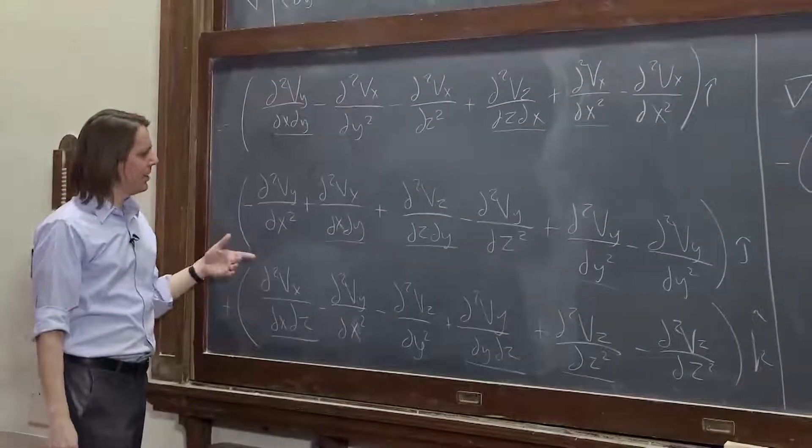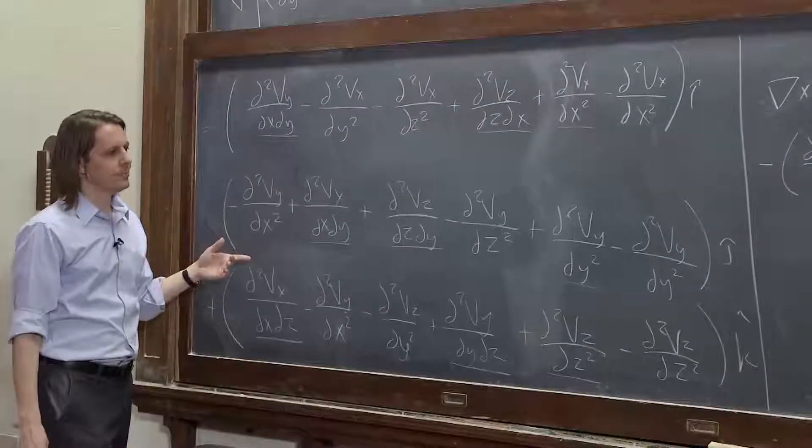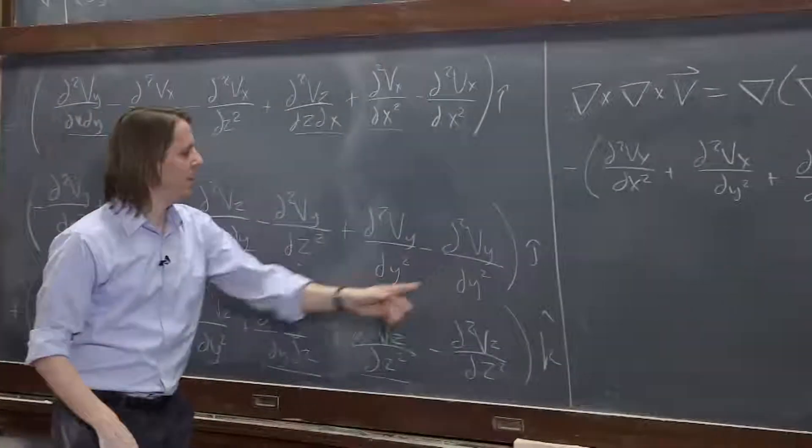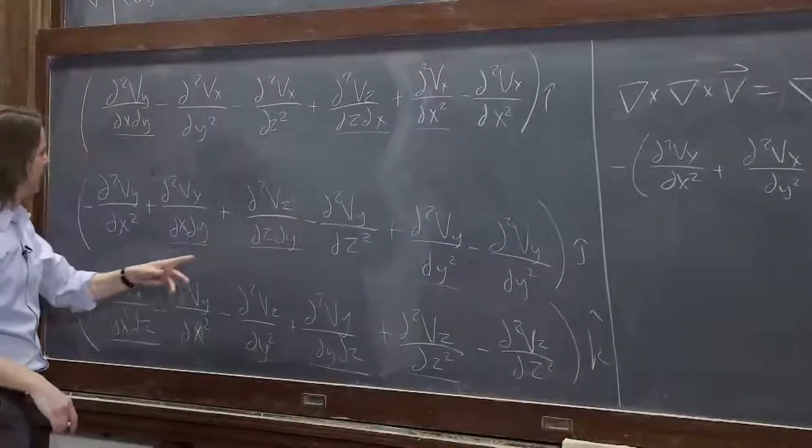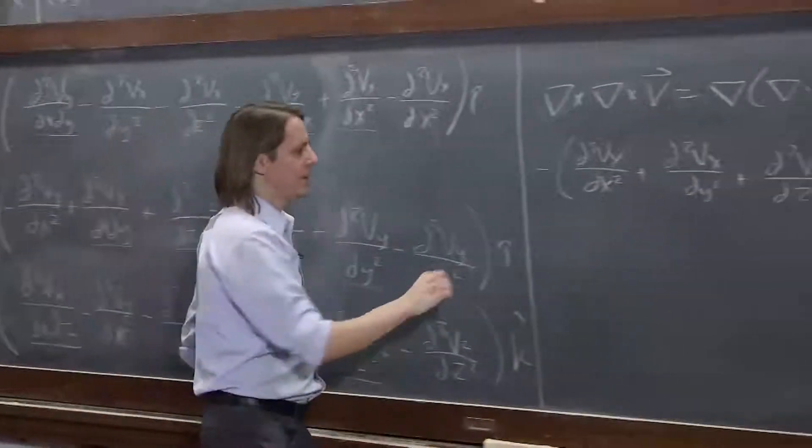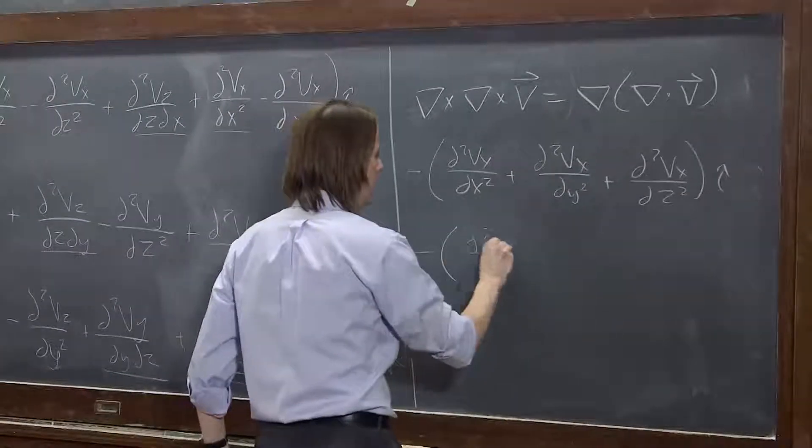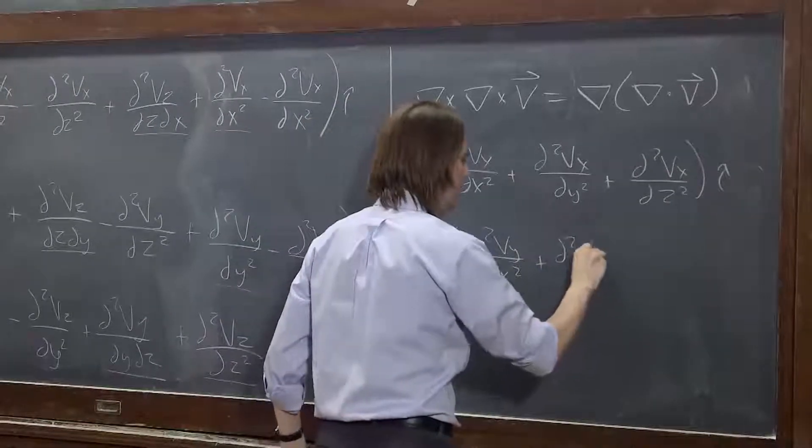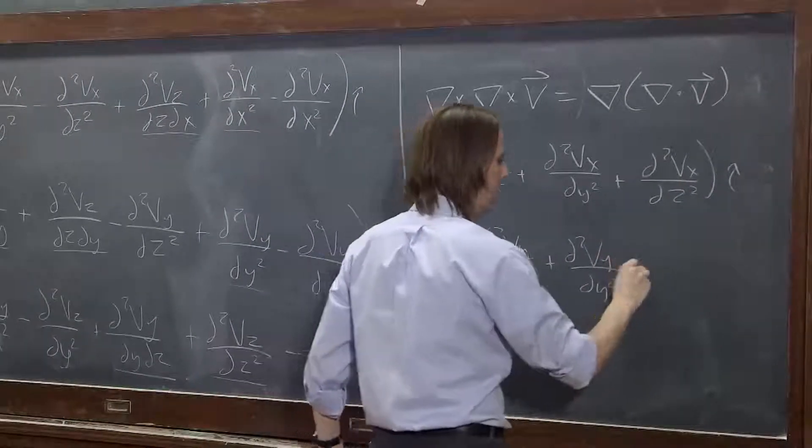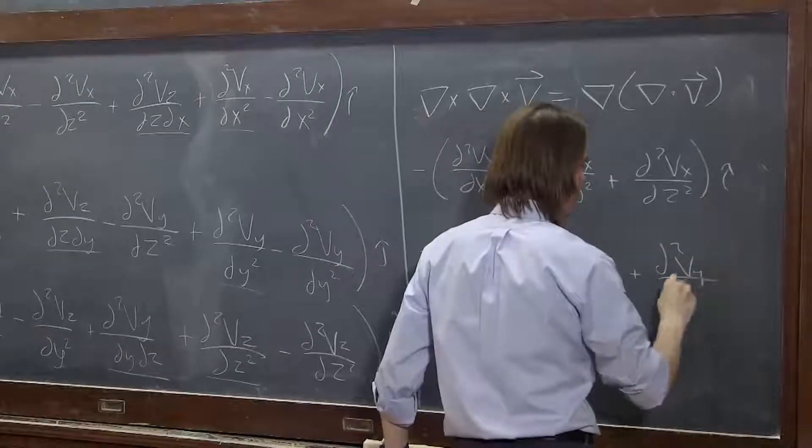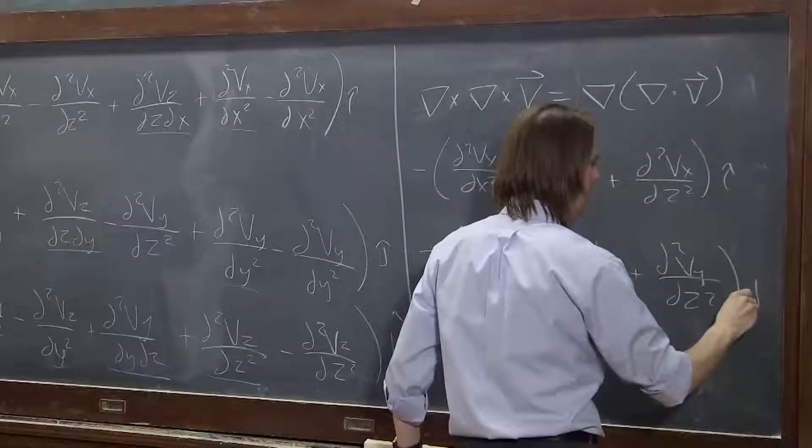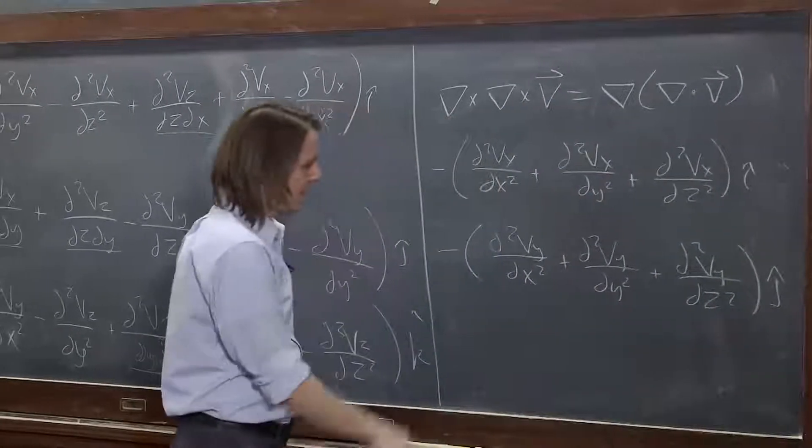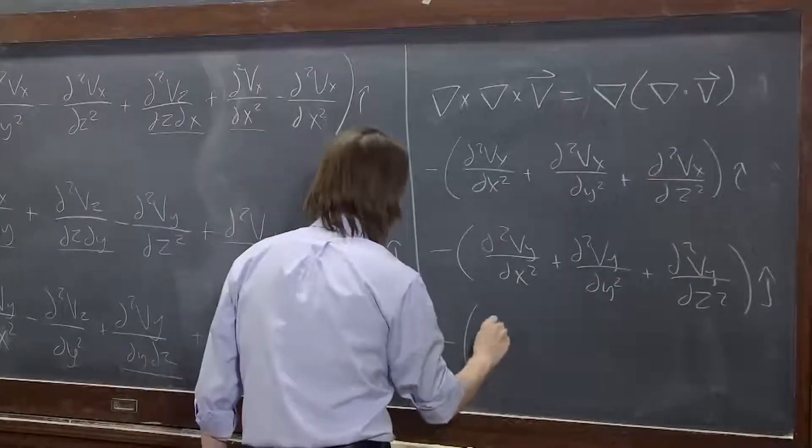And then what was left on j hat? Well, it's going to be similar, but with y's. Okay. d²vy/dy², d²vy/dz², d²vy/dx². On j hat, the minus is out here again.